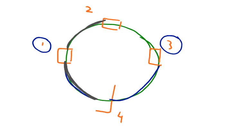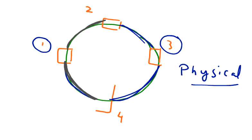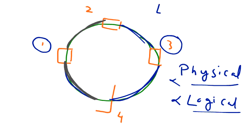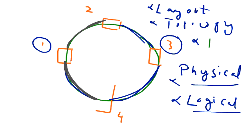Every computer is connected to two of its neighbors and they form a ring. In this picture we have a physical ring because it's a perfect ring, and the data also flows logically in the ring. So it is both a physical and logical ring topology — more commonly called a ring network.